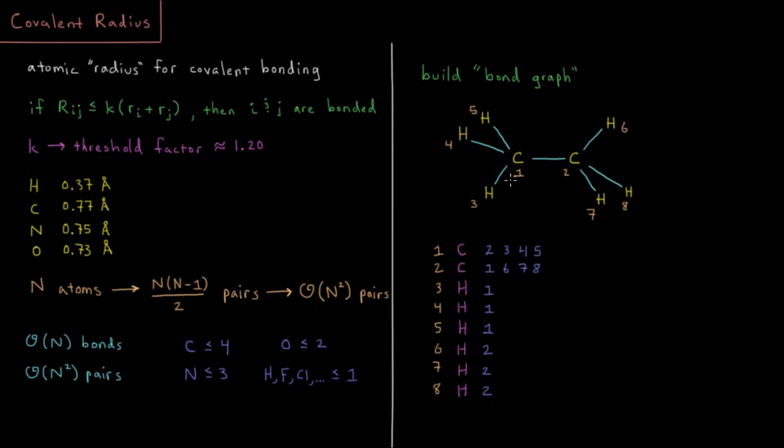So for carbon 1 here, it's bonded to atoms 2, 3, 4, and 5. Carbon 2 is bonded to atoms 1, 6, 7, and 8. And then atoms 3, 4, and 5 are bonded to carbon 1. Atoms 6, 7, and 8 are bonded to carbon 2.